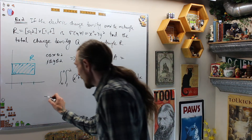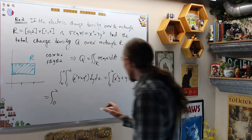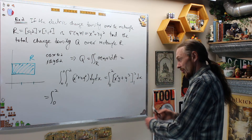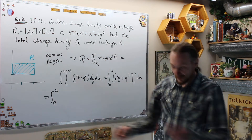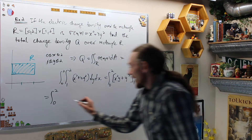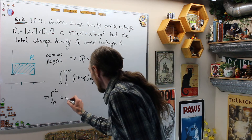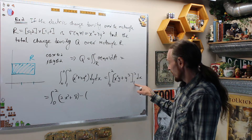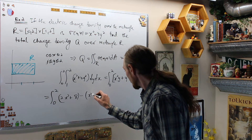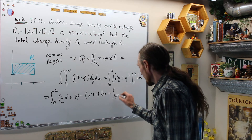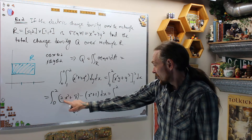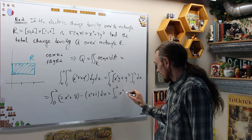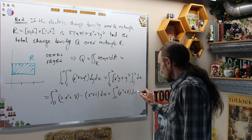That gives me the integral from 0 to 2 of [2x² + 8 − (x² + 1)] dx, which equals the integral from 0 to 2 of [x² + 7] dx.